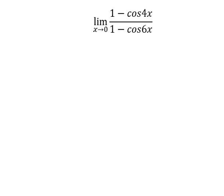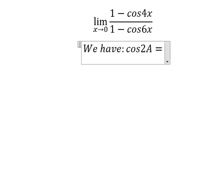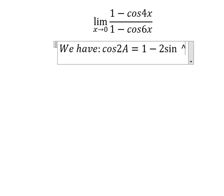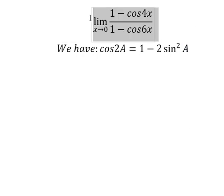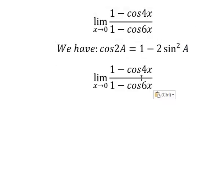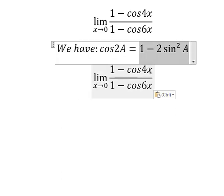Hello everybody, so today I want to talk about calculus, the topic that is about limits. Now I want to show you how to answer. We have the formula in here that is about cosine 2A equals to 1 minus 2 sine squared A. So in this one we need to transform cosine 4x into this one.